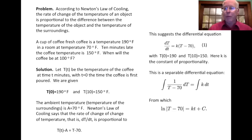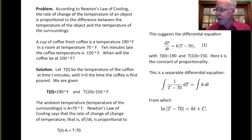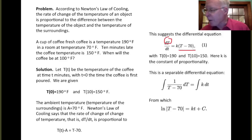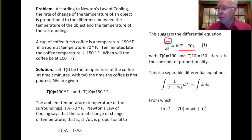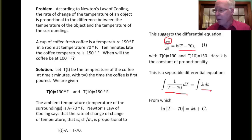This is a separable equation. On the right-hand side, things are written as a function of capital T, and there's no little t. We can bring all the capital T terms to one side and all the t terms to the other. This gives us: one over (T minus 70) dT equals k dt.